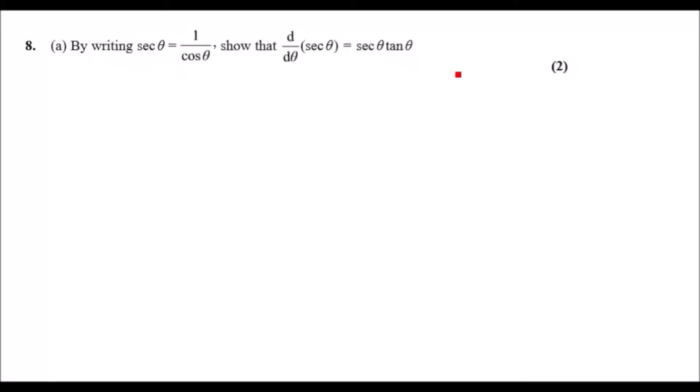Looking at this question, we want to differentiate sec and it's equal to 1 over cos. I would use this because it can be easily solved using the quotient rule. Remember the quotient rule tells us we need two variables: a u which is the top and a v which is the bottom.